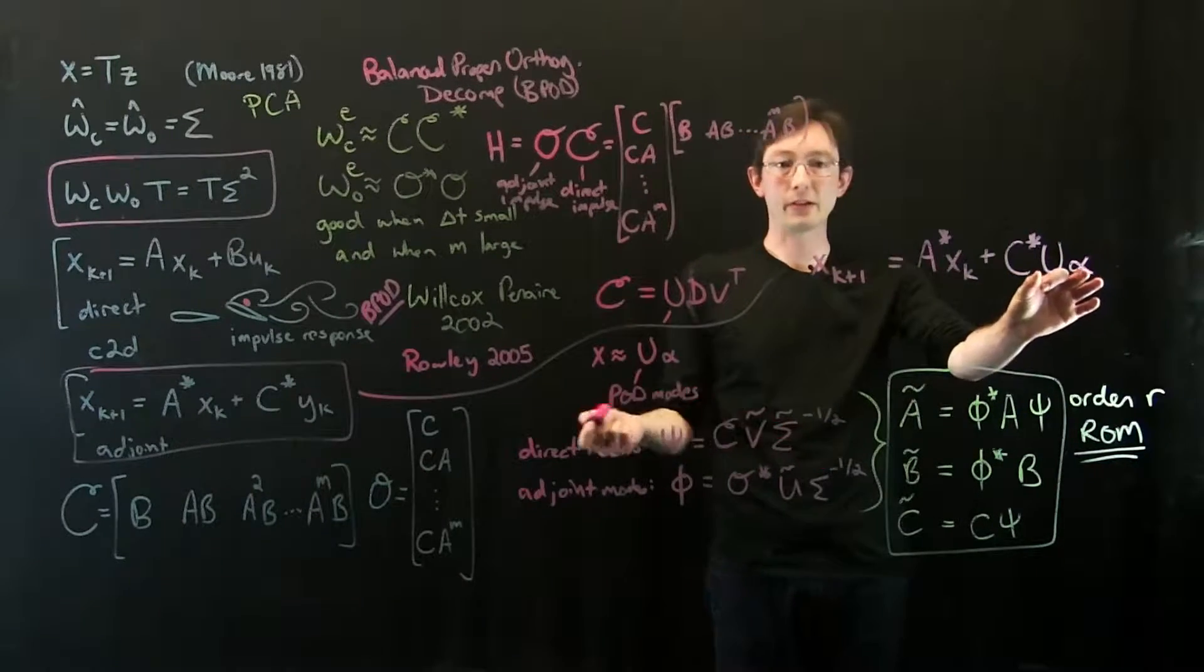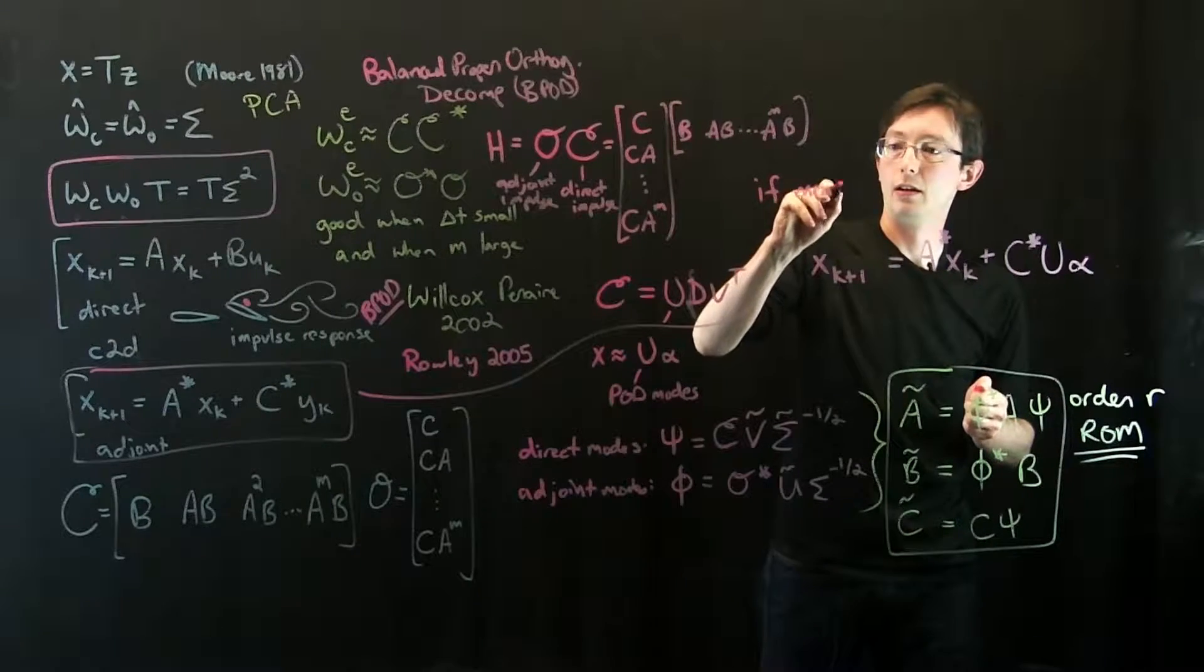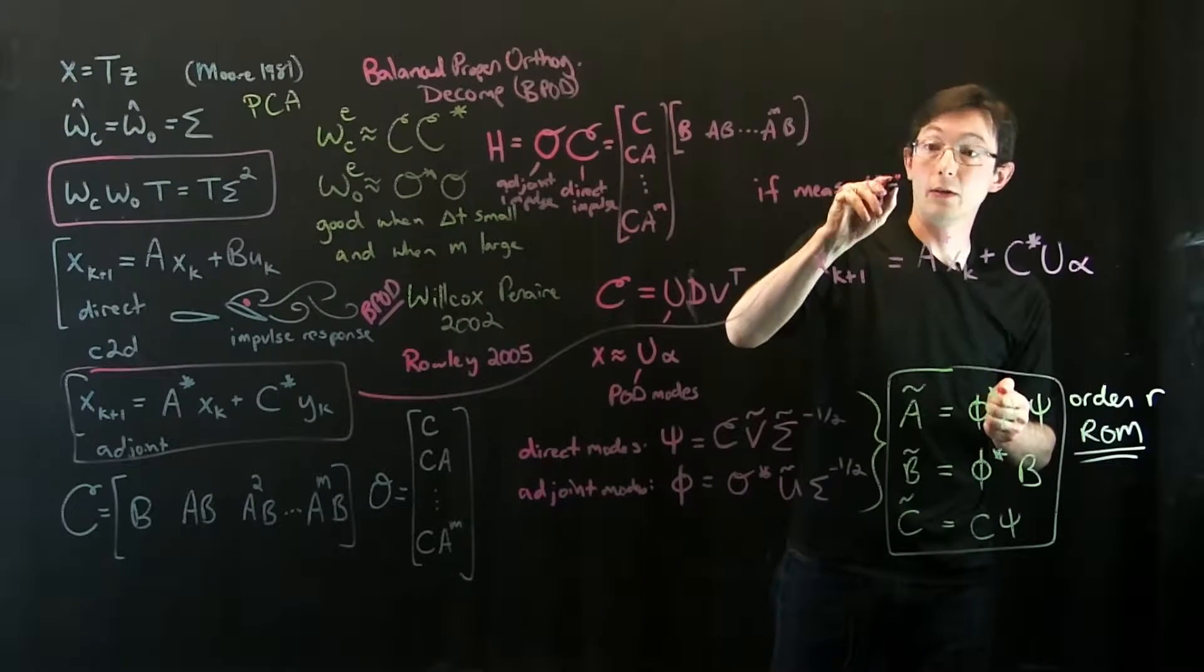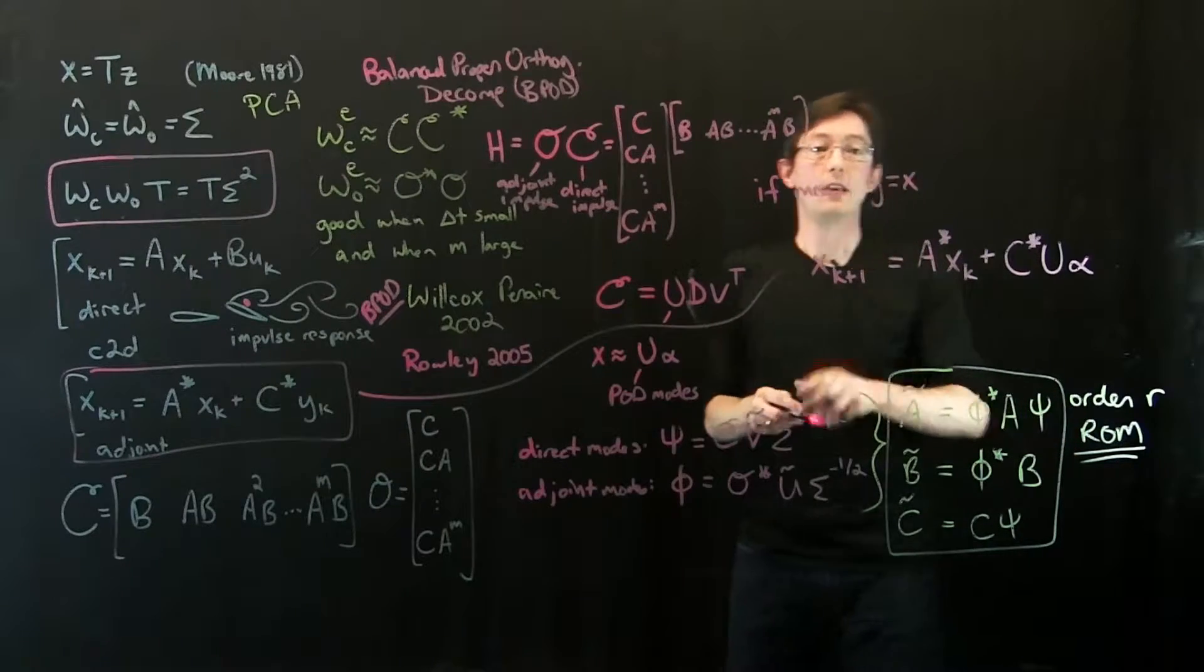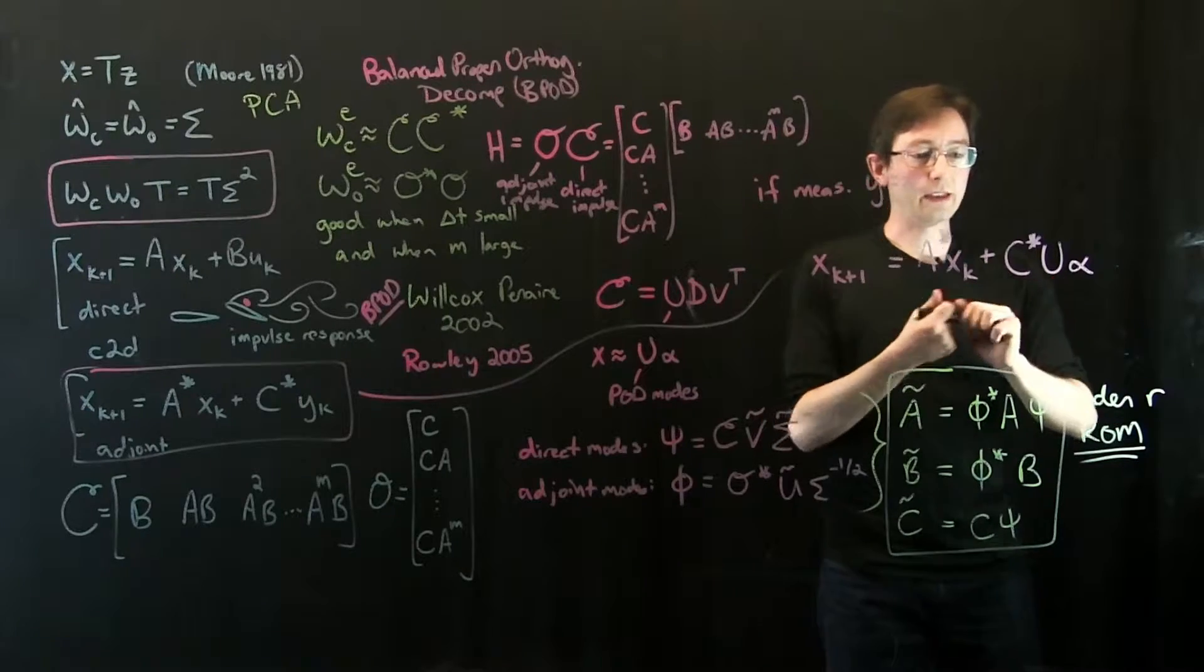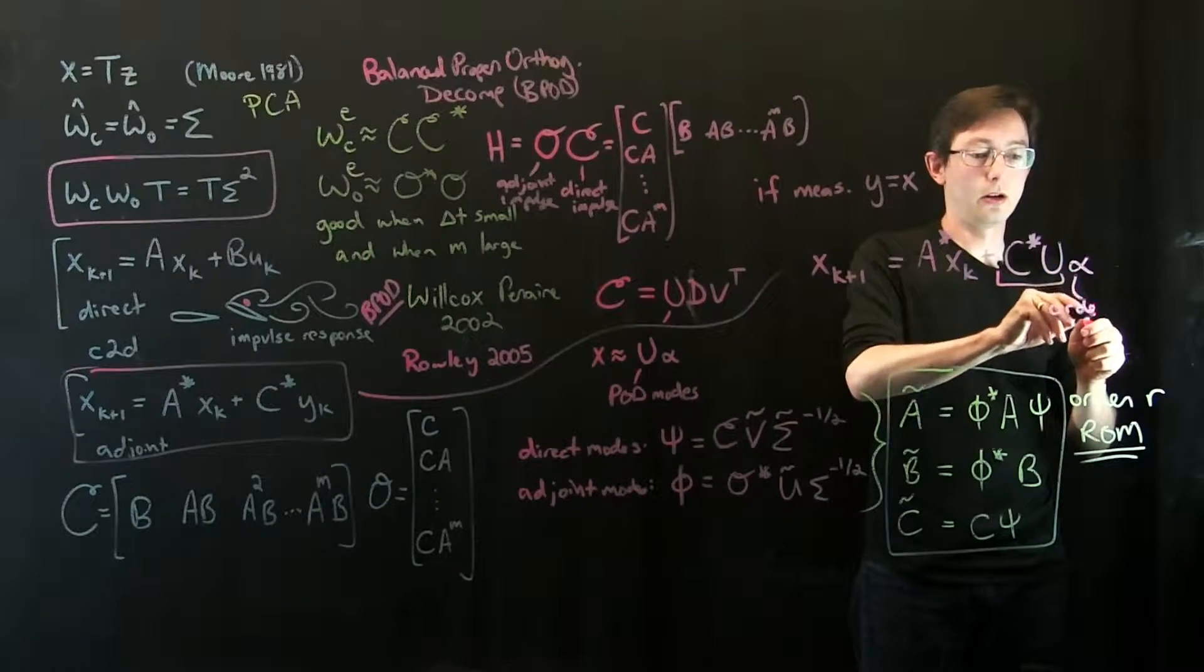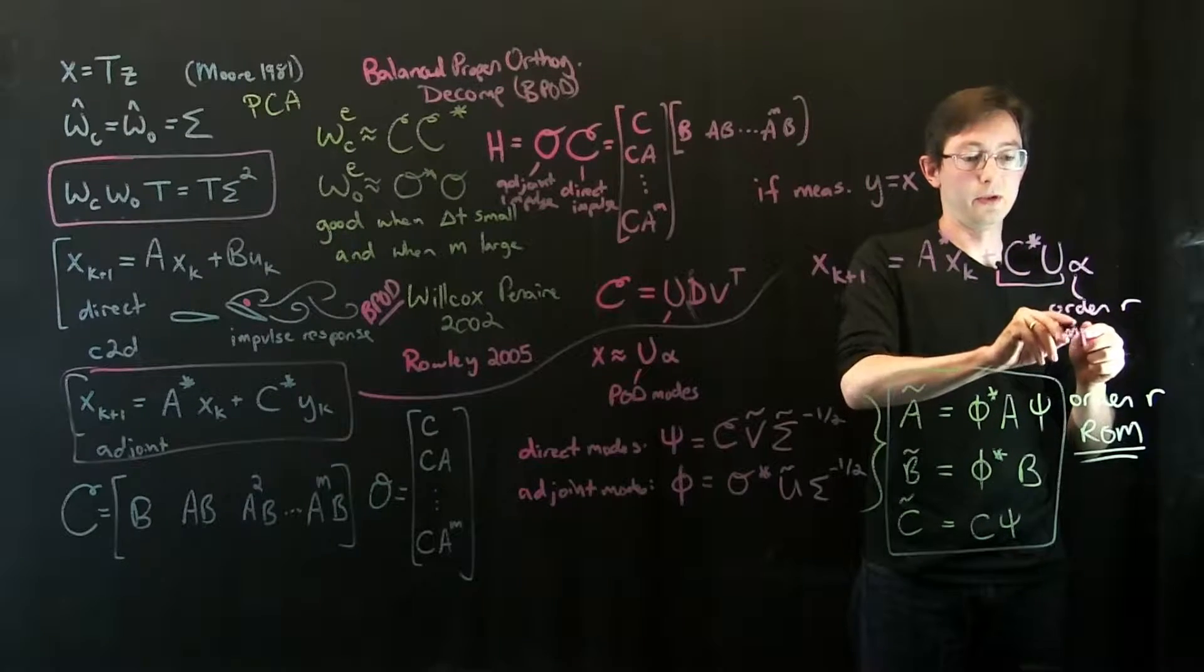And so basically if I was measuring, this is for if we measure Y equals X, we measure the full state, then instead of this being an X here, I can replace it with U alpha.